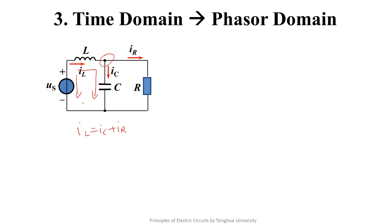By applying KVL to this loop, we know US equals L times di over dt plus 1 over c times the integral of IC.